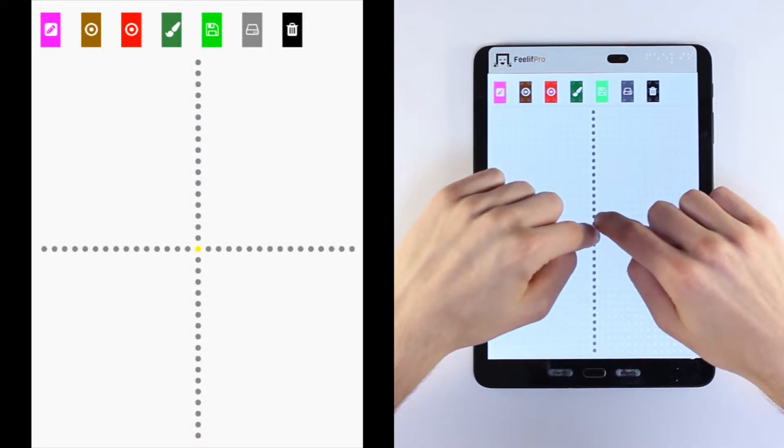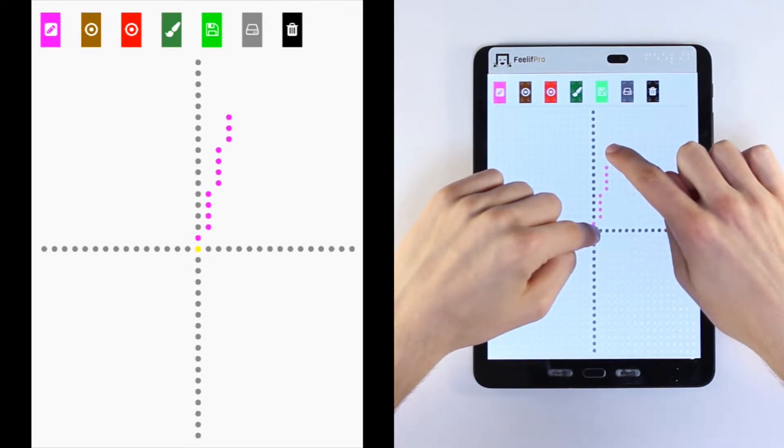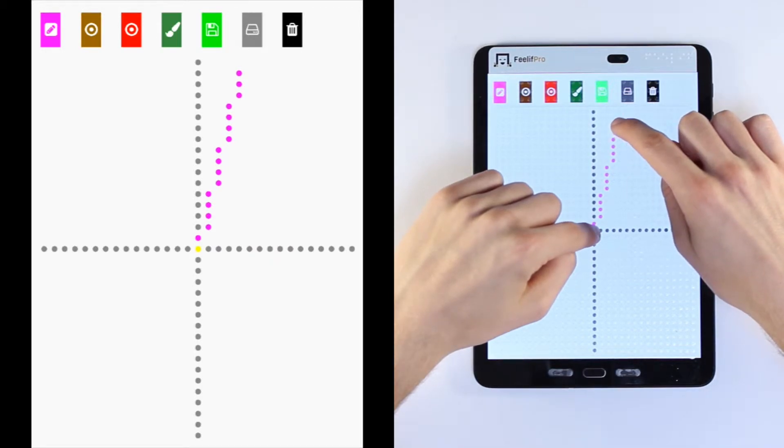After that, the blind and visually impaired users can calculate the needed information and proceed to find the zeros, minimums, maximums, and the function on screen.